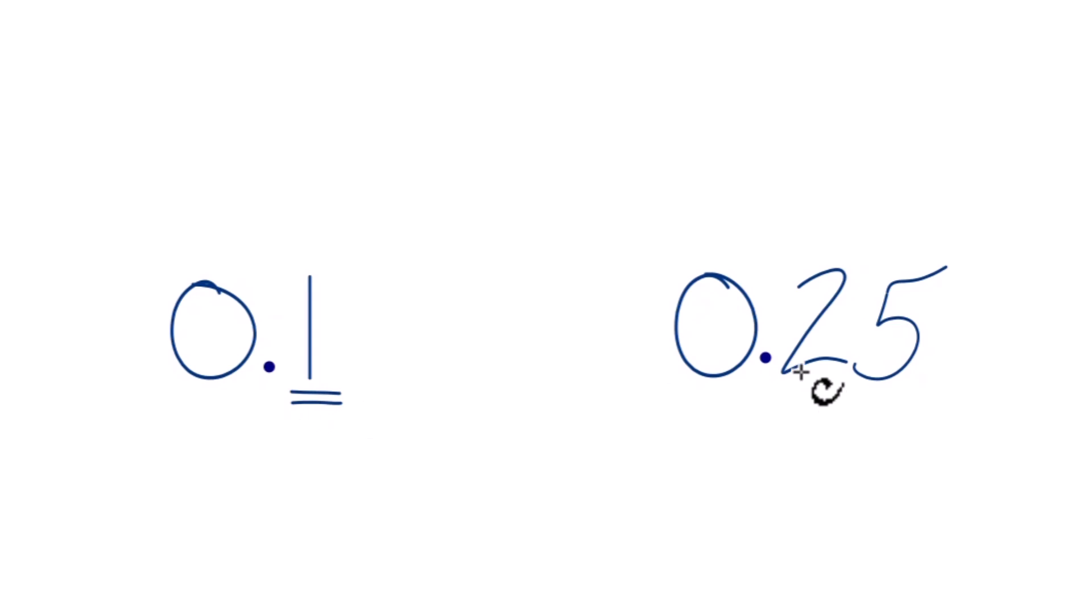So here it's 1, here the first digit after the decimal place is 2, and that means 0.25 is larger than 0.1. Sometimes it's helpful to think about having a 0 after this so you can see the 25 is larger than the 10. But either way, 0.1 is less than 0.25.